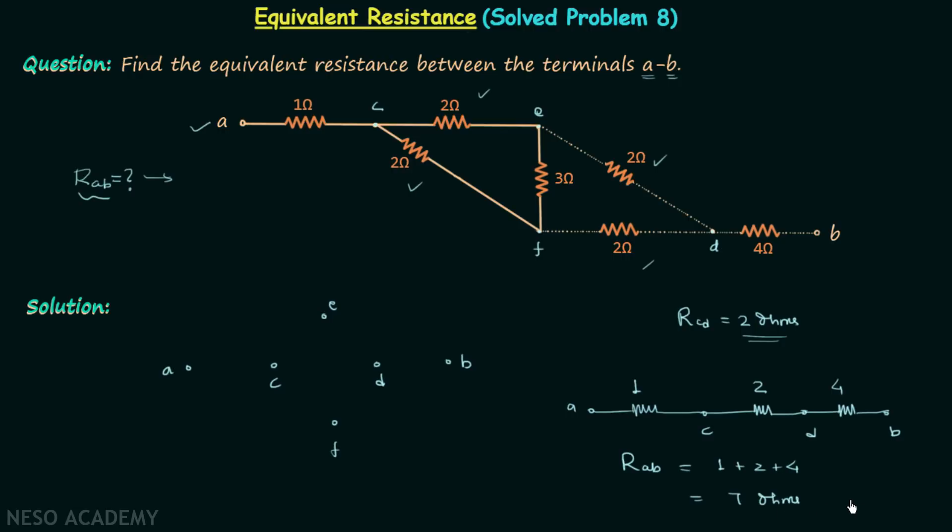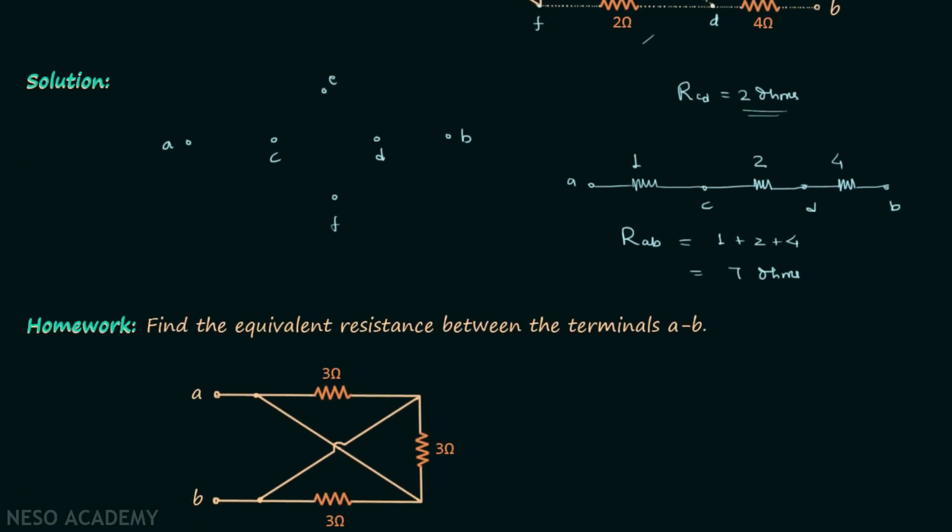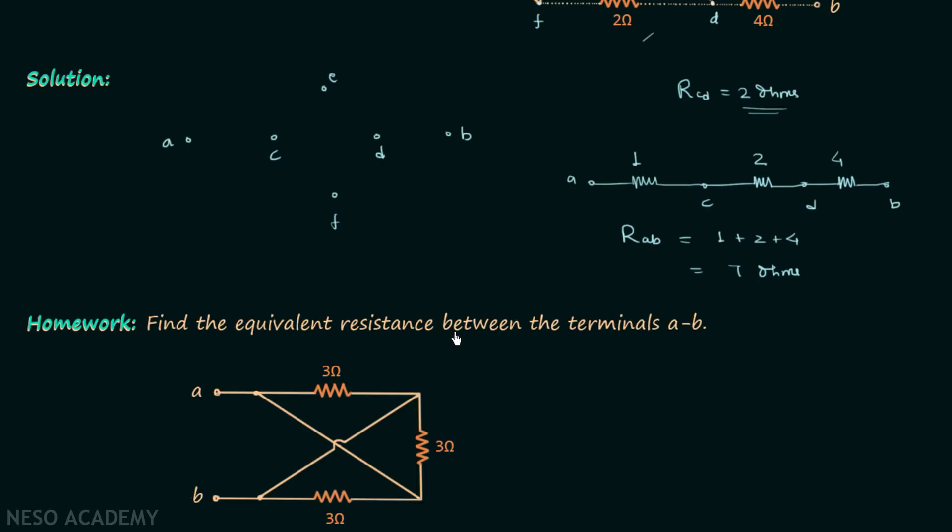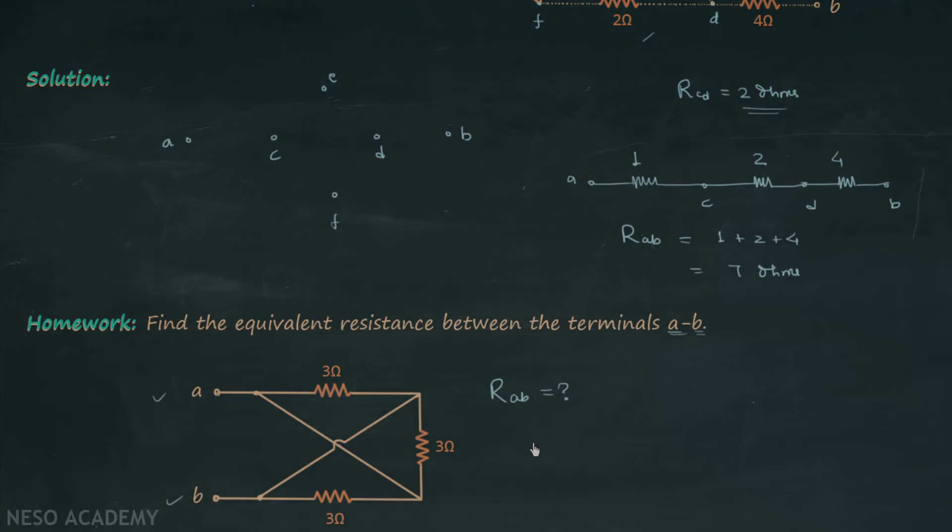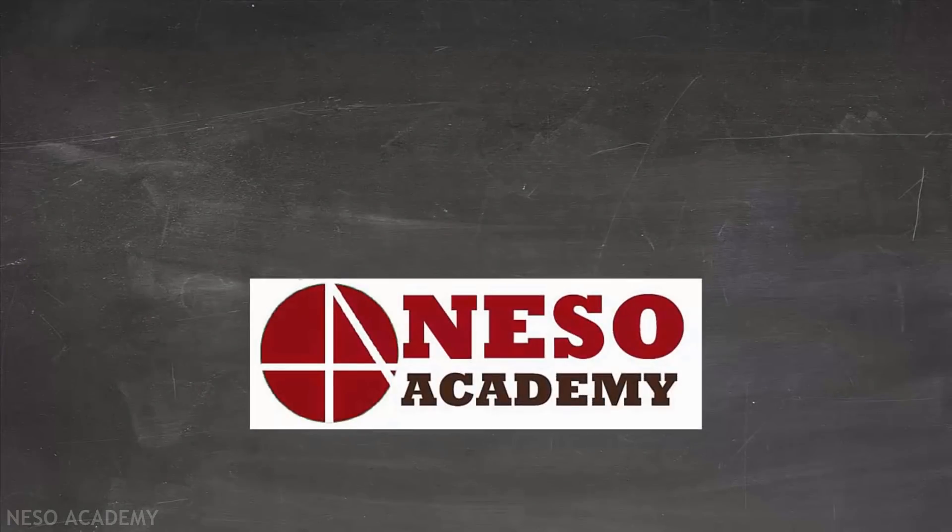So whenever you face any difficulty in solving the given network, always try to rearrange the network. Now we will move on to our homework problem. In the homework problem, you are required to find the equivalent resistance between terminals A and B. Calculate R sub AB, and once you have your answer, post it in the comment section.